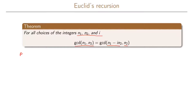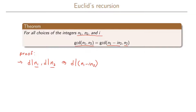We can prove this theorem as follows. In the right direction, we have that d divides n1 and d divides n2, and from this it is clear that d will also divide n1 minus i times n2. So we can say that every common divisor of n1 and n2 is also a common divisor of n1 minus i*n2 and n2.